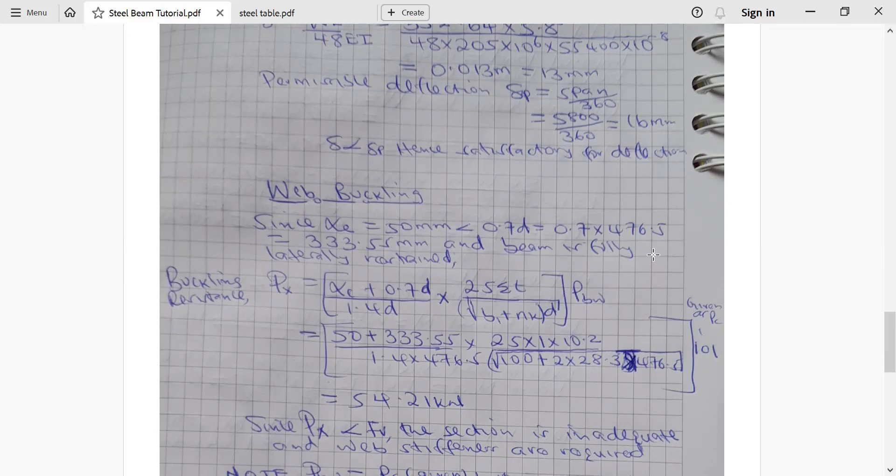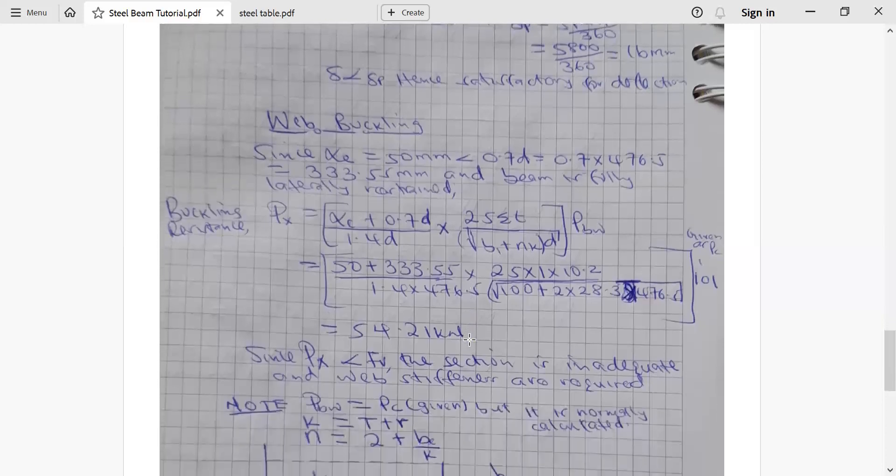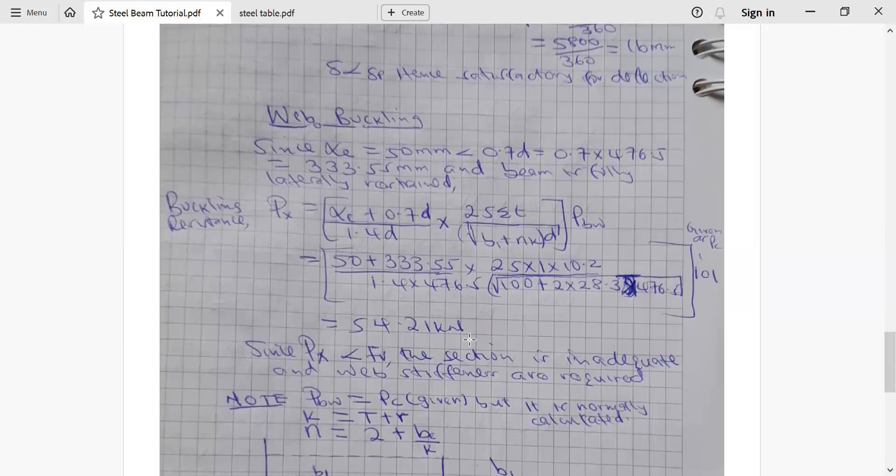And now this pbw, it's called the web bearing capacity. You have to calculate it. But in our equation here, please get it carefully. In our equation here, we are going to replace it by the given pc. We'll put the value of pc that 101. So we'll not calculate the web bearing capacity. Now, if we substitute, this alpha_E is 50, 0.7 d, we know it's that 373.17. You substitute our N here. Our N is 2 and our K is 28.3. You get the value of 54.21 kilonewton. So our buckling resistance, it can't resist 54.21 kilonewton,